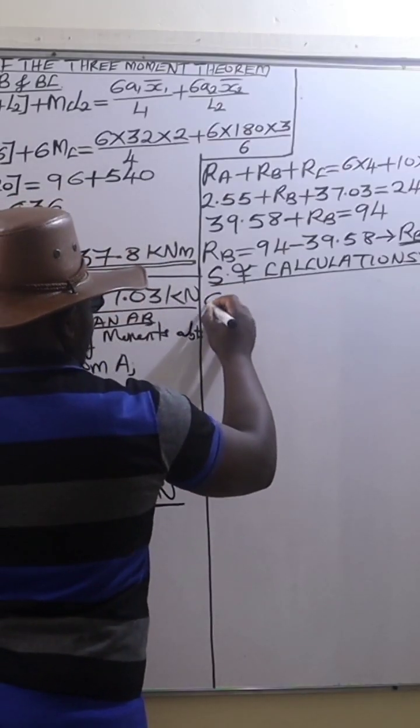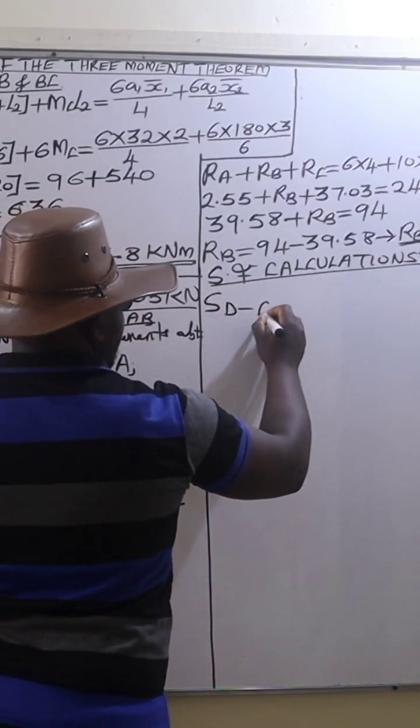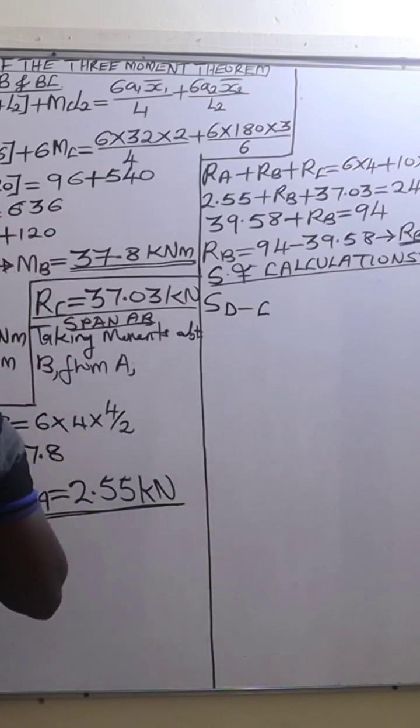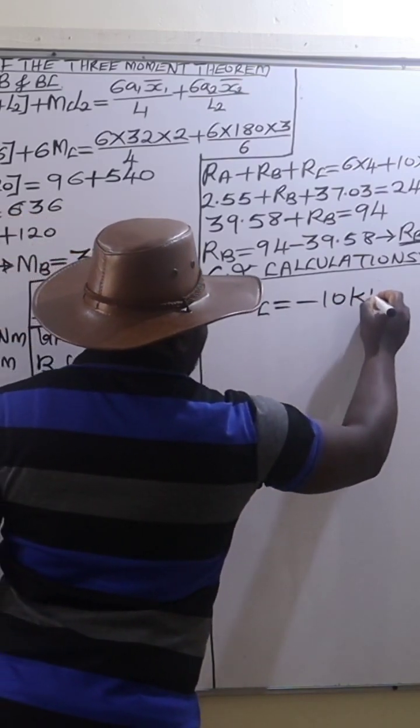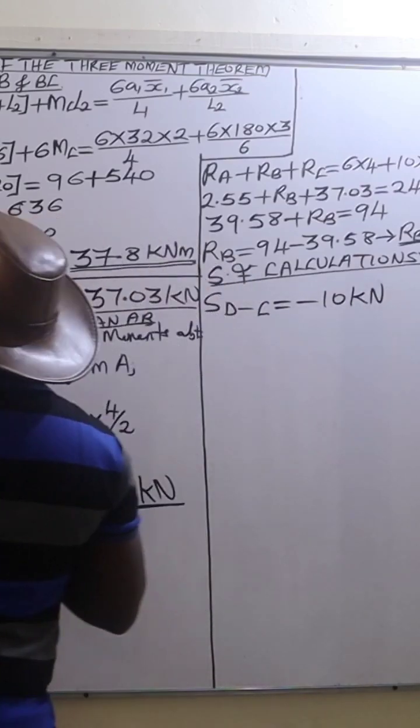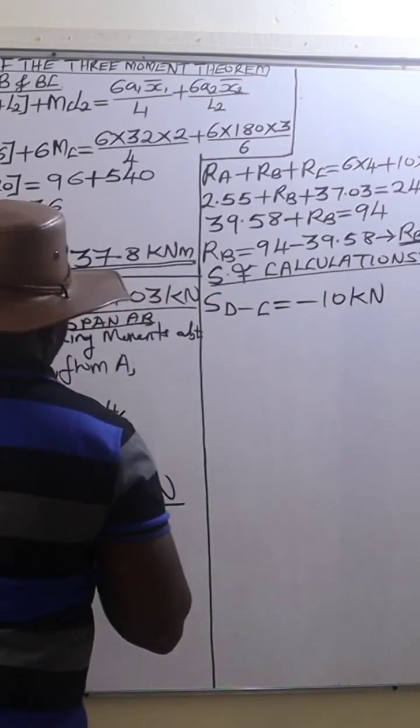In this case, we are going to begin with the shear force between D and C, that is the overhanging end. And the shear force there is going to be negative 10 kilonewtons, negative since that end is overhanging.